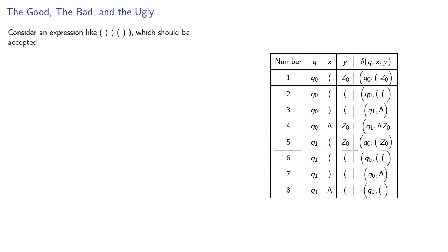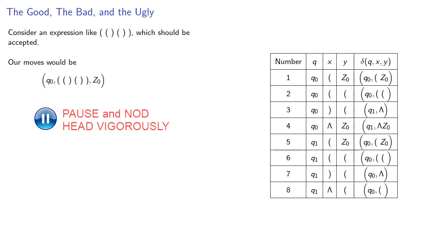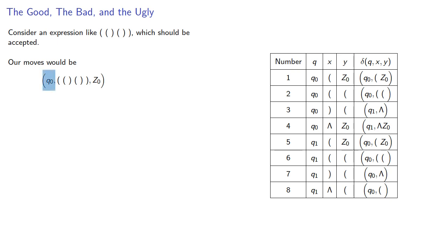Let's consider an expression which should be accepted. We'll start in state q0, our string is the full string, and our stack just has the empty stack symbol z0. We're in state q0, the symbol we read is open parenthesis, the stack symbol is z0, and our delta transition tells us we stay in state q0 and replace the stack symbol with open parenthesis z0.